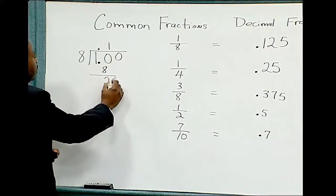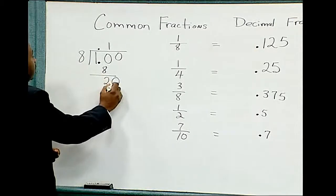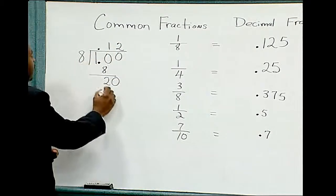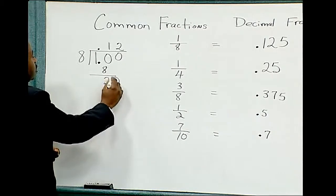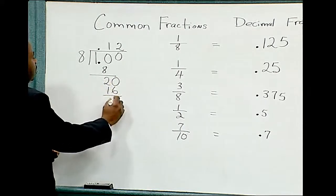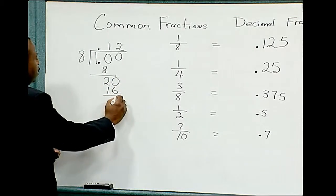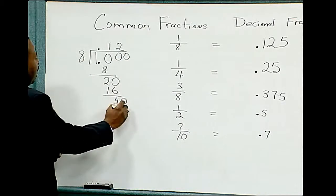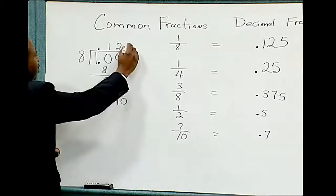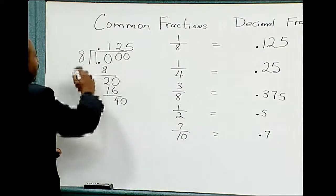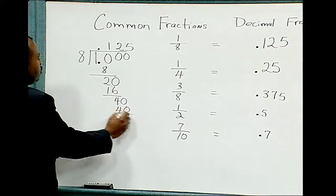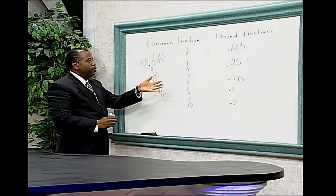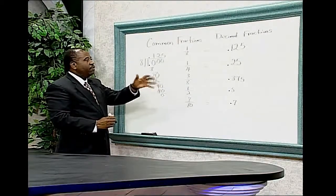Add a 0 and bring the 0 down. 8 divides into 20 two times. 2 times 8 is 16. 20 minus 16 leaves 4. Add a 0 and bring the 0 down. 8 divides into 40 five times. 5 times 8 is 40, remainder 0. Therefore, 1/8 is equivalent to 0.125.